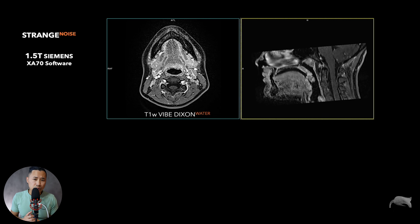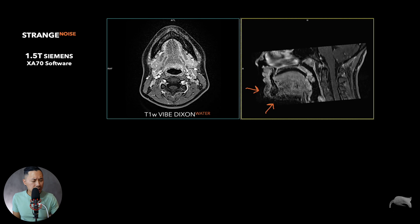This was done at 1.5 Tesla on the Siemens scanner software XA70. Like I told you in the beginning, this part looks strange. I was thinking about whether I needed more SNR, but then at the end you can see there's a lot of signal in the back and up top — but there's some noise kicking in the top there, while the middle is perfectly fine.